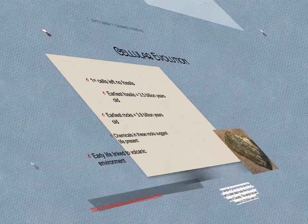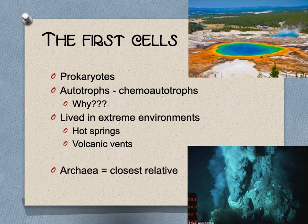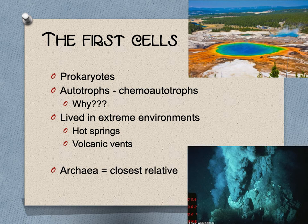The first cells were definitely prokaryotes and were most likely chemoautotrophs. Photosynthesis hadn't been invented yet, and you couldn't eat anything that wasn't already there. They lived in extreme environments like hot springs and volcanic vents.